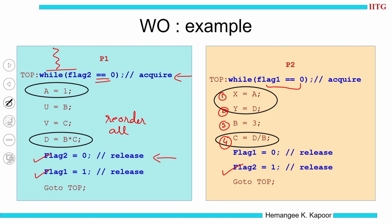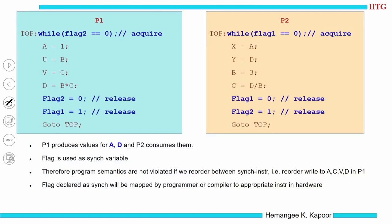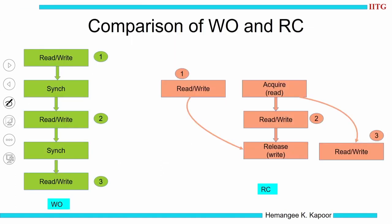Weak ordering is very simple: you simply have to insert sync instructions in the program. Here flag is used as a synchronization variable. Program semantics are not violated if we reorder instructions between the two sync instructions. When I declare a flag as a synchronization variable, the compiler or programmer maps it to an appropriate instruction in the hardware equivalent to the safety net provided by that memory consistency model. Looking at the weak ordering figure, you do several read-writes, then sync, then read-write, sync, and read-write — three blocks. Every block can do reordering but amongst them they cannot reorder.